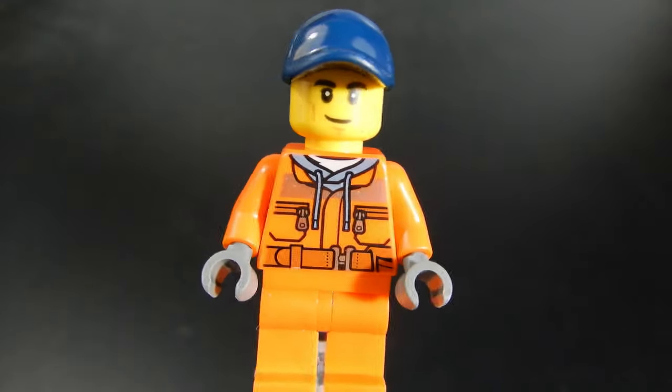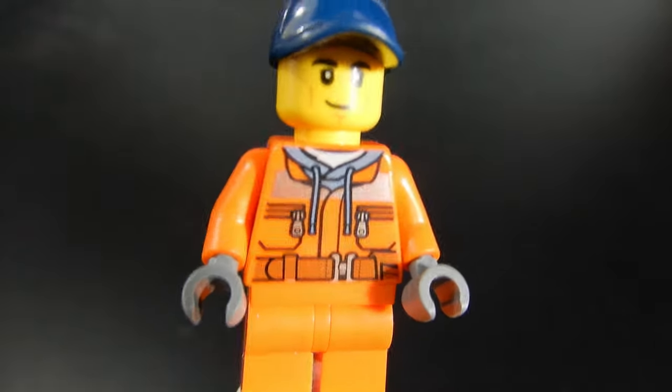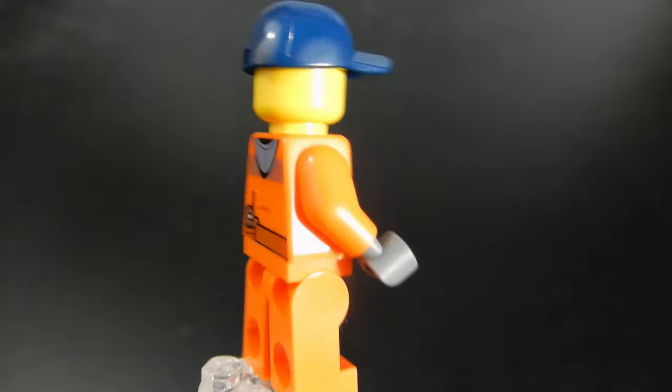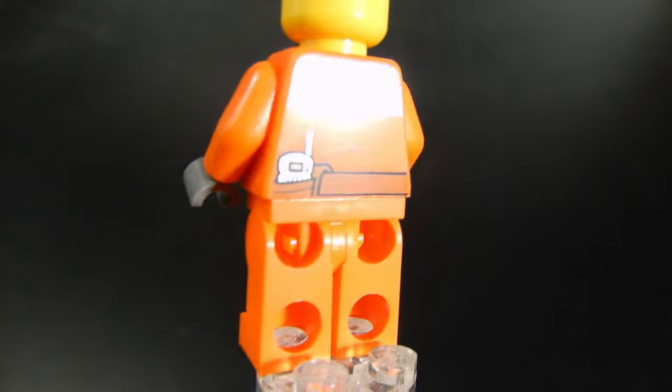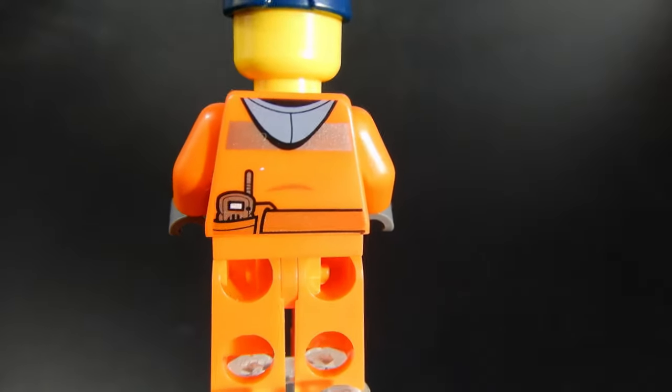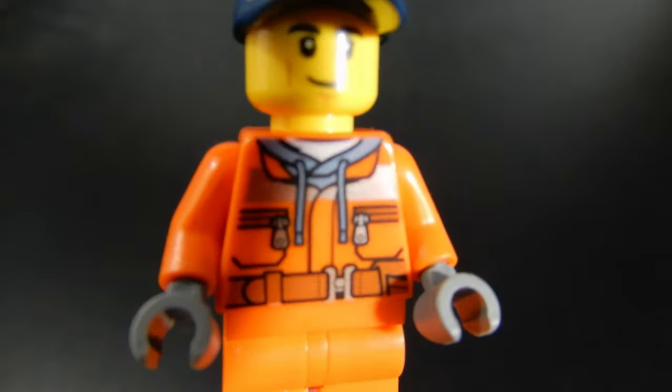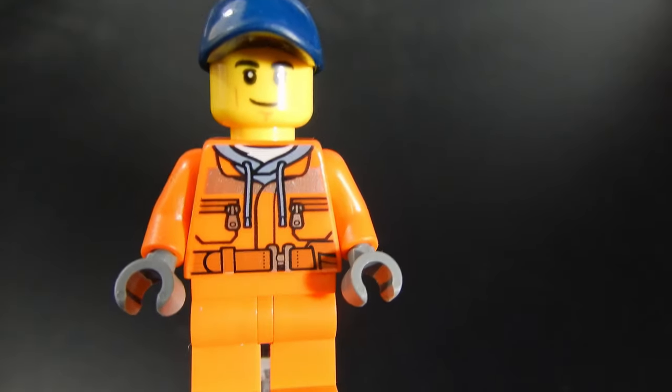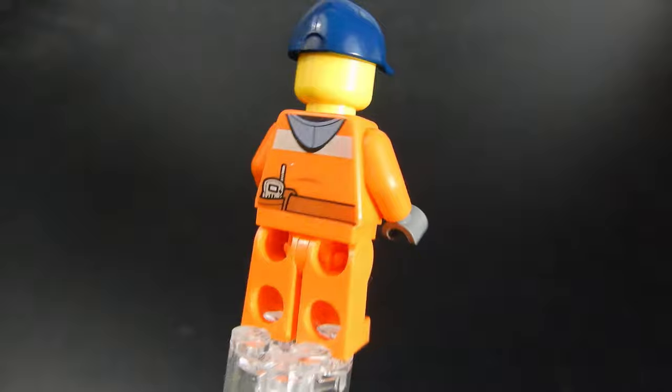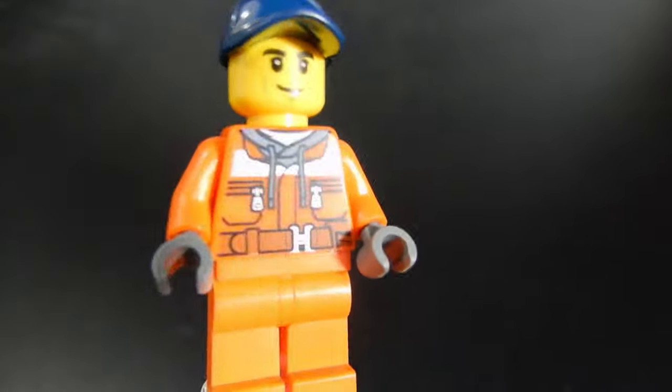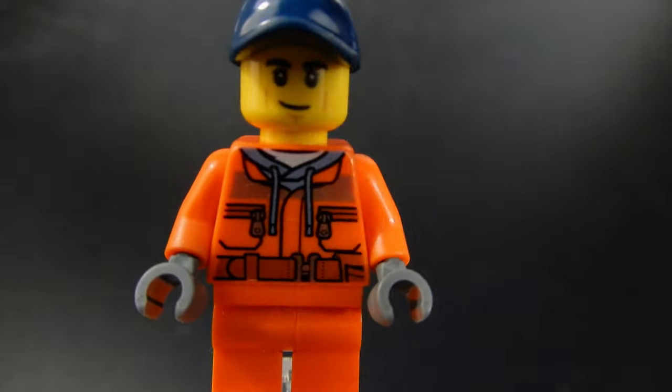Alright, and this is the driver of the Street Sweeper. He's got a nice torso print there, and a nice smiley face. He's got some gray gloves and a blue cap. No alternate face, of course, but back print is pretty good. He's got a radio in his pocket, and you can see the hood from his sweatshirt underneath, and you can see the drawstrings hanging out on the front. So that's a nice print. I don't think I've seen that one before. Nothing on the legs, but still not too bad. Nice little figure, and a perfect match for the Street Sweeper vehicle.